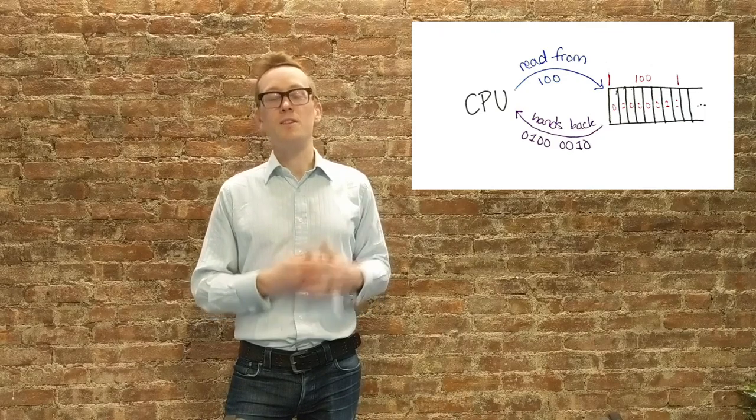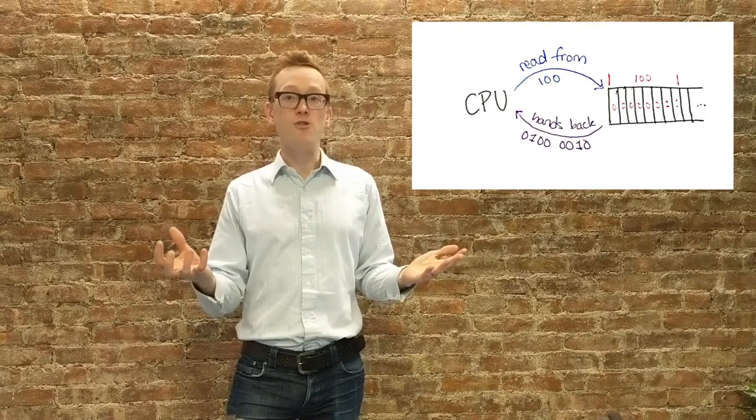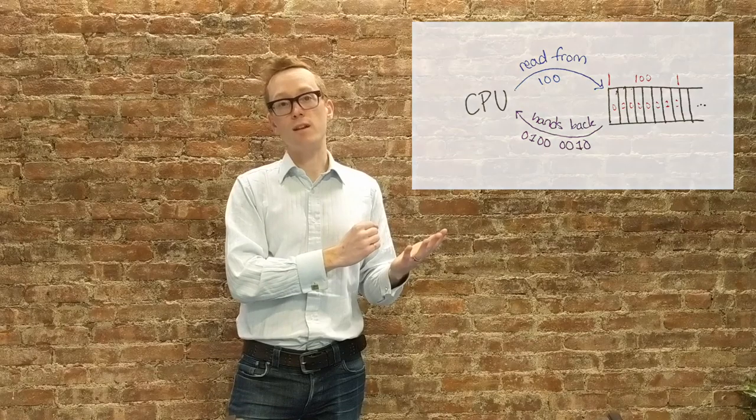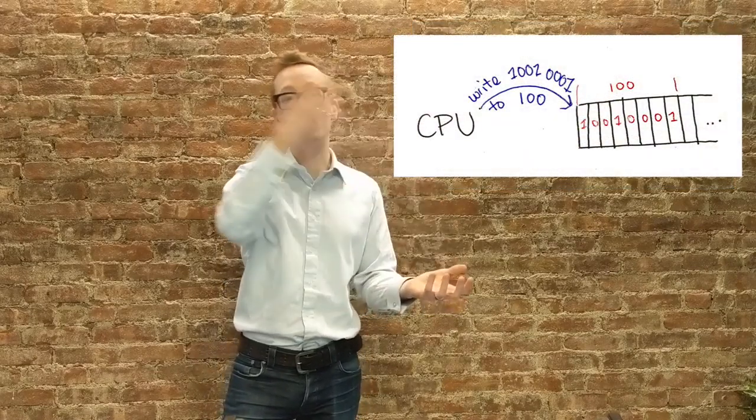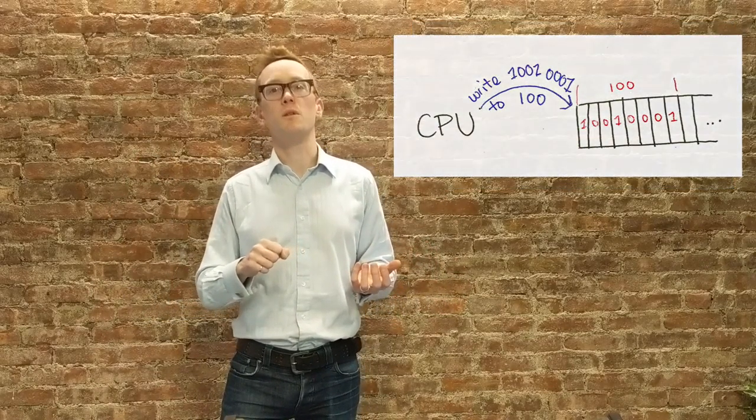To read a byte from memory, the CPU gives memory its address and the memory hands back the data that's stored at that address. To do a write, the CPU gives memory both the address and the data and it then stores them.